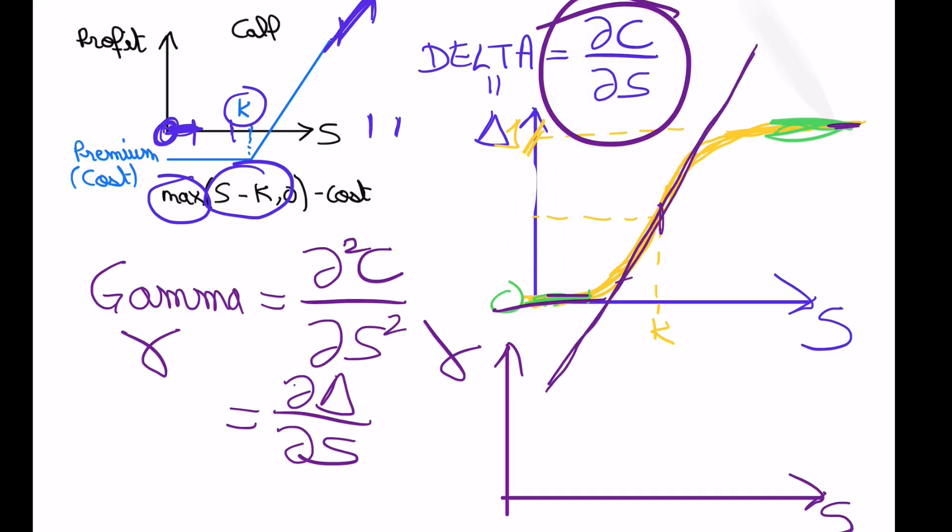And when you're here, the gamma is the slope of this curve, the tangent to the graph, because it's the derivative.